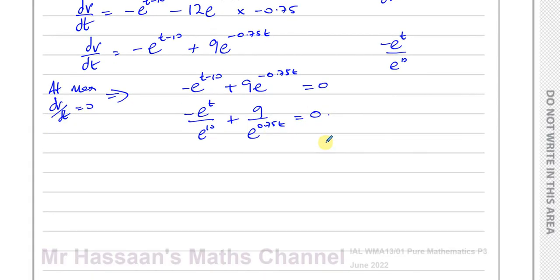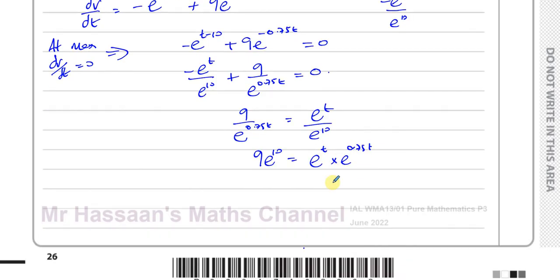So now if we rearrange this, I have 9 over e to the power of 0.75t equals e to the power of t over e to the power of 10. Now I can cross multiply to get rid of the fractions. 9e to the power of 10 equals e to the power of t times e to the power of 0.75t. Now these two, you can add the powers. So that's going to be 1.75t. So you're left with 9 times e to the power of 10 equals e to the power of 1.75t.